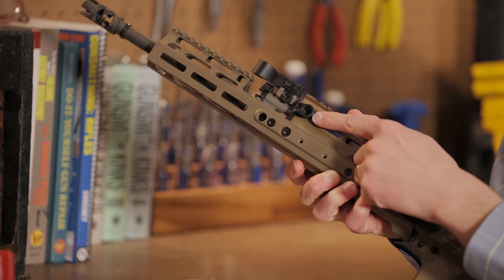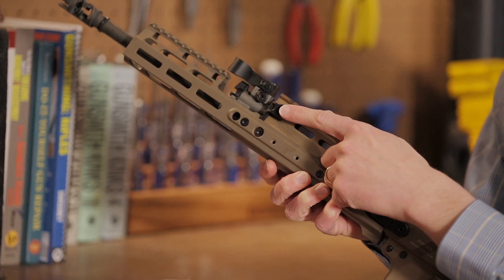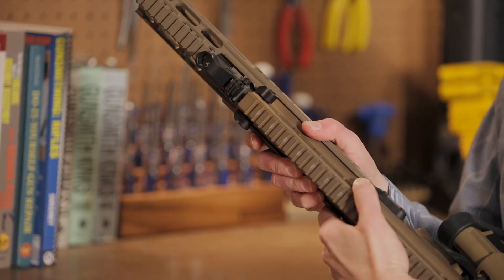Also from Kinetic Research Group, we have these QD sling swivel attachments. This attaches to the front of the SCAR. You can see it's on both sides there.